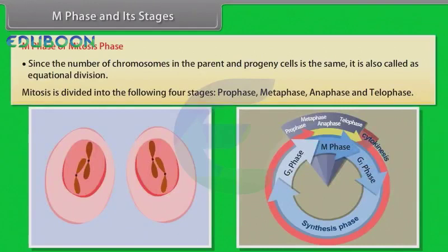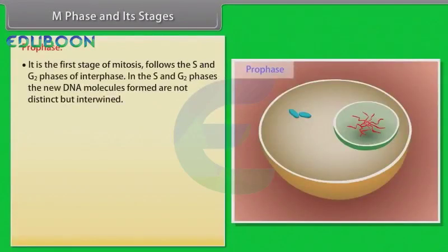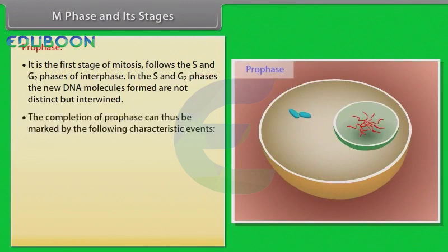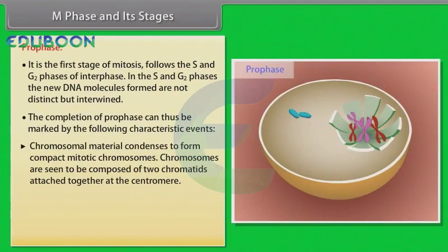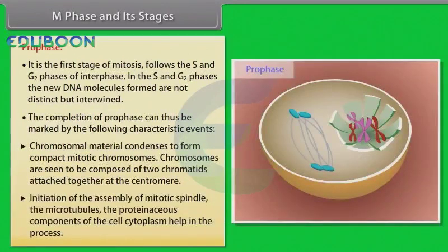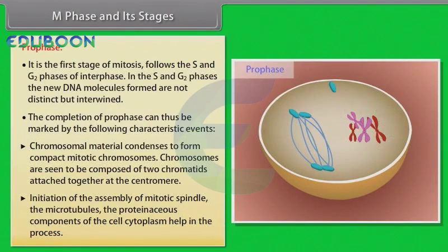The first stage of mitosis is prophase. It follows the S and G2 phases of interphase. In the S and G2 phases, the new DNA molecules formed are not distinct but intertwined. The completion of prophase can be marked by the following characteristic events: chromosomal material condenses to form compact mitotic chromosomes, chromosomes are seen to be composed of two chromatids attached together at the centromere, and initiation of the assembly of mitotic spindle using microtubules, the proteinaceous components of the cell cytoplasm.